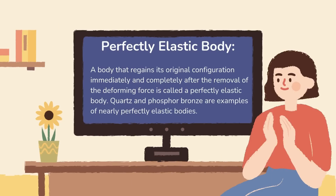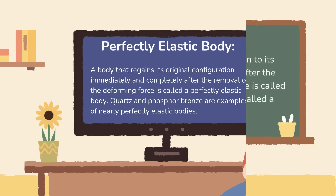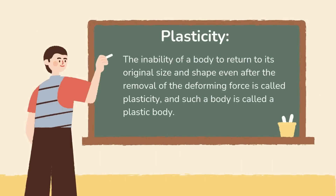Next up, perfectly elastic body. A body which regains its original configuration immediately and completely after the removal of deforming force from it is called a perfectly elastic body. Quartz and phosphor bronze are examples of nearly perfectly elastic bodies. The inability of a body to return to its original size and shape even after the removal of the deforming force is called plasticity, and such a body is called a plastic body.